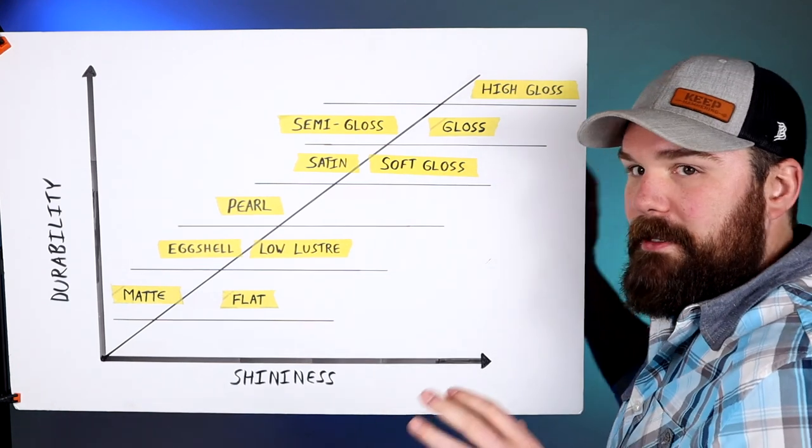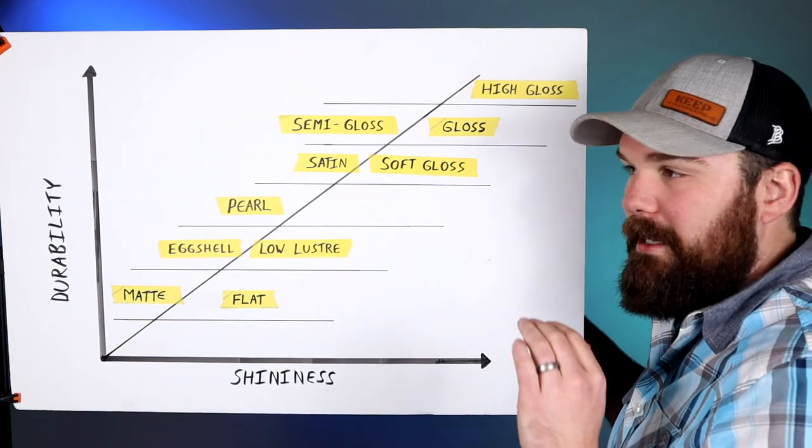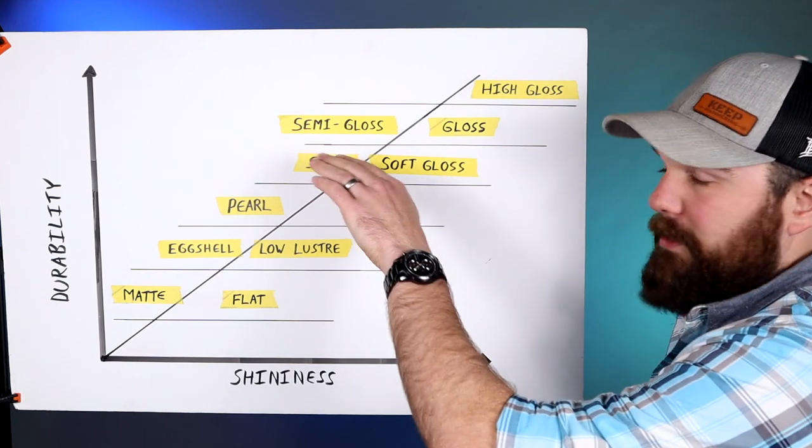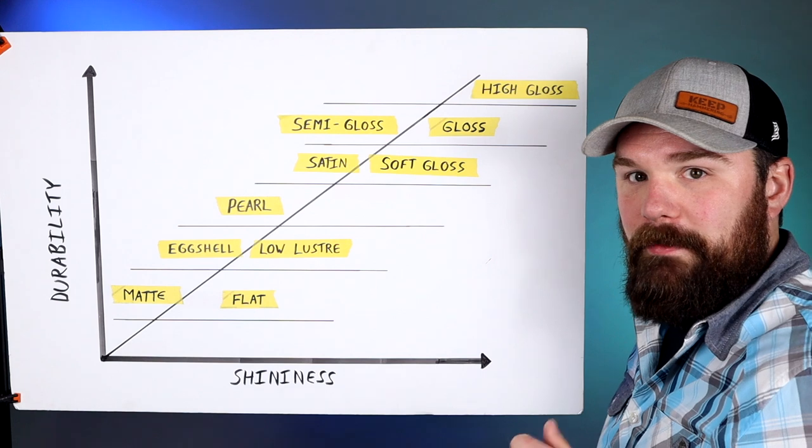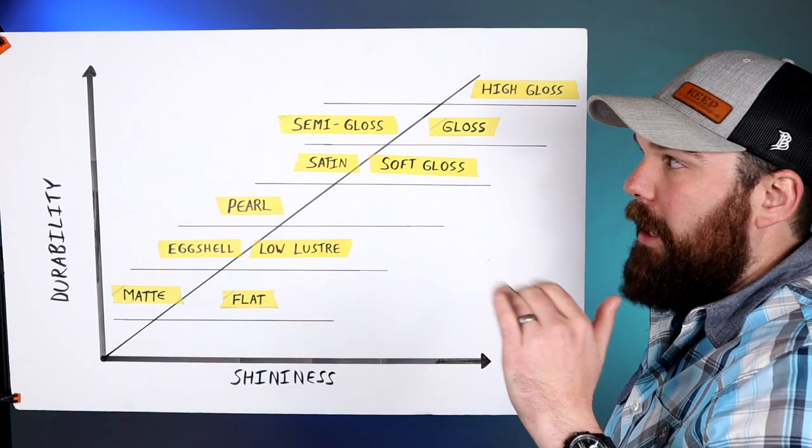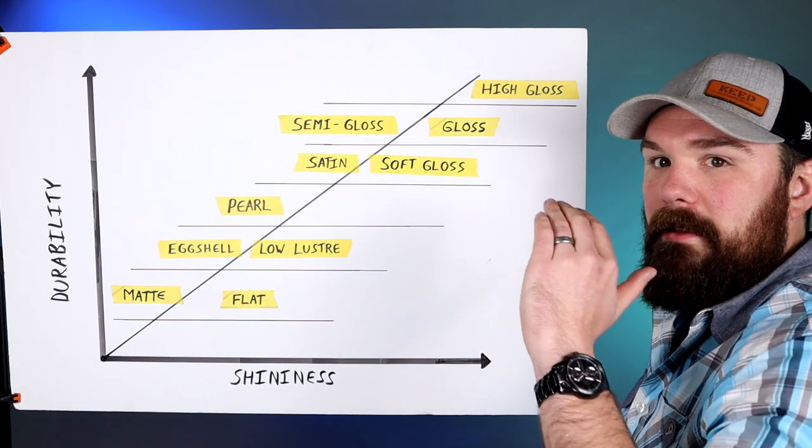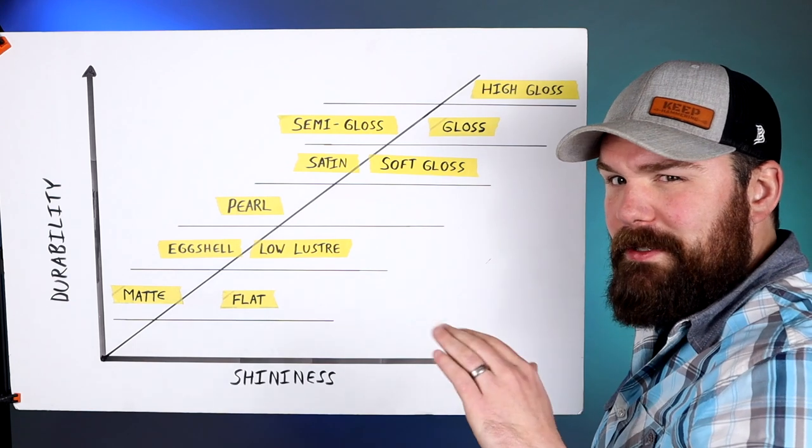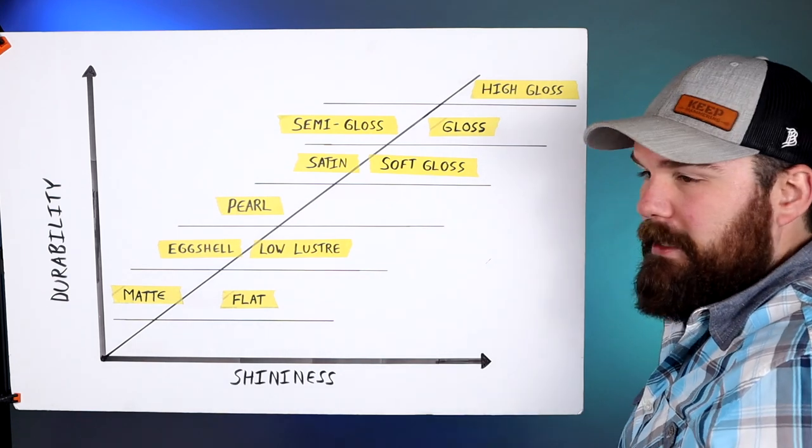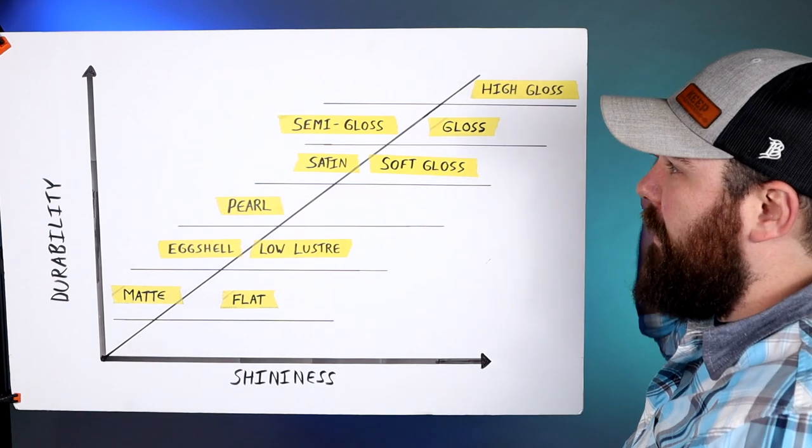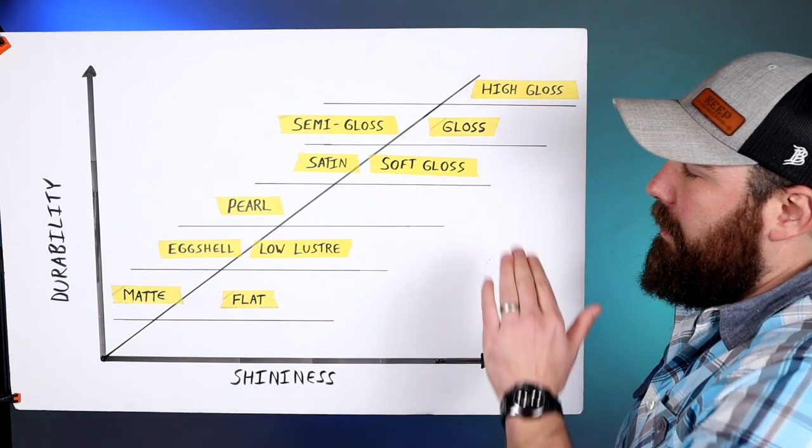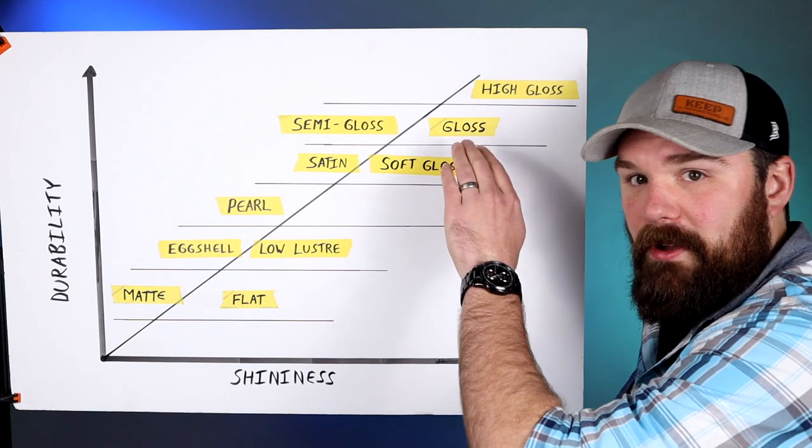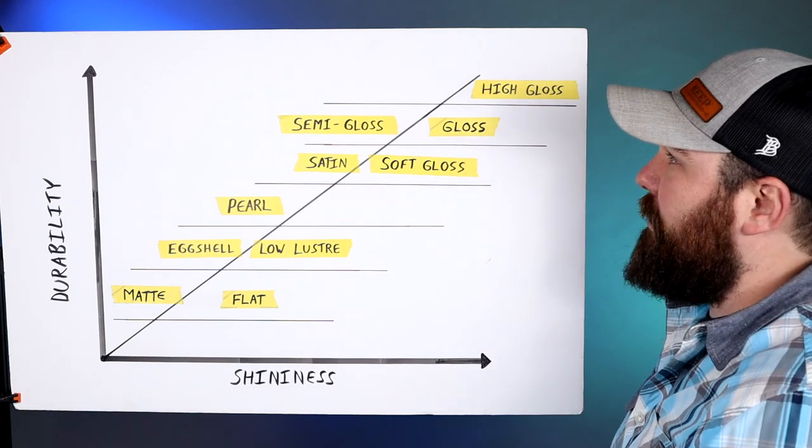Now moving on up to gloss, most exterior gloss paint is much closer to a semi gloss. So for instance, the Duration line of exterior paints from Sherwin-Williams, their highest sheen, I think it goes satin and then gloss, but the gloss is much closer to a semi gloss and it looks good. A lot of people like that on the trim, doors and shutters as well. Again, it's a personal preference. I tend to drift towards the soft gloss, but again, that's just my personal preference.